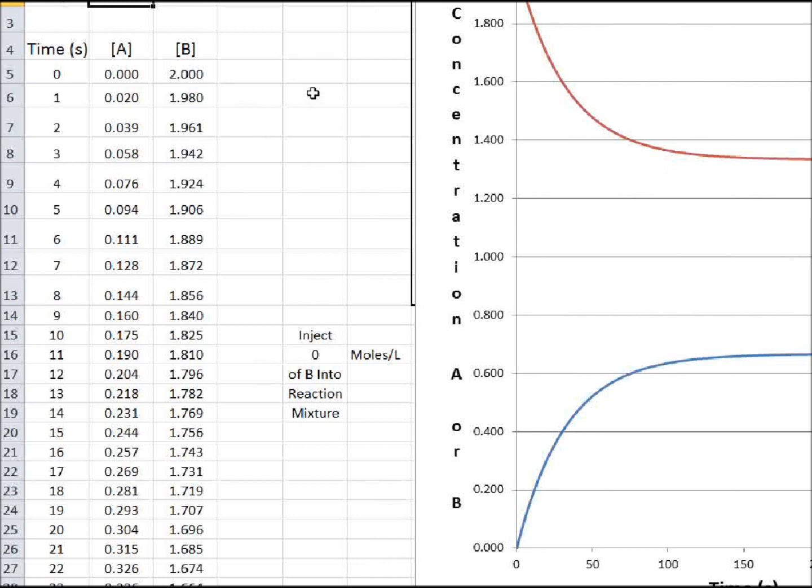You're changing A to B twice as fast as you're changing B to A. So in order for them to be in equilibrium, the concentration of B has to be twice as large as the concentration of A so that the moles of B going to A becomes the same as the moles of A going to B at equilibrium.